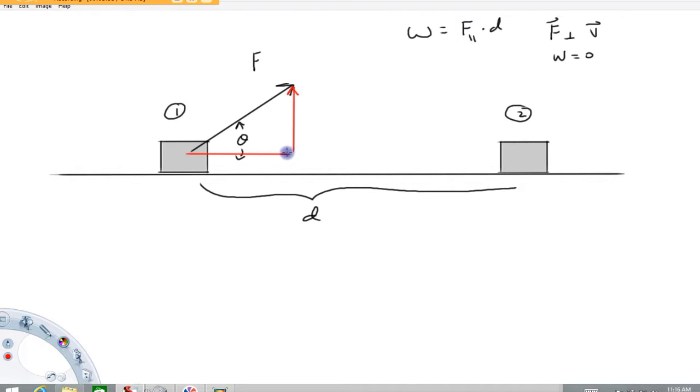Now what I'm going to call these: I'm going to call this one f parallel. This is the component of that force vector that is parallel to the velocity or parallel to the displacement, either one doesn't matter. This component is the component that is perpendicular to the displacement.